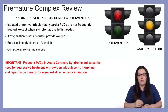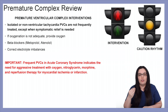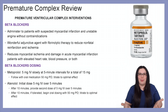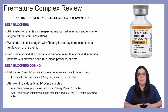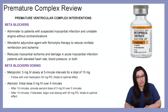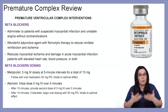It's important to note that frequent PVCs in acute coronary syndrome indicates the need for more aggressive treatment with oxygen, nitroglycerin, morphine, and reperfusion therapy for myocardial ischemia and myocardial infarction. So let's take a look at our beta blockers. We administer beta blockers to patients with suspected myocardial infarction and unstable angina without contraindications. They also work well with fibrinolytic therapy to reduce non-fatal re-infarctions and ischemia, and they reduce myocardial ischemia and damage in acute MI patients with elevated heart rates, blood pressure, or both.